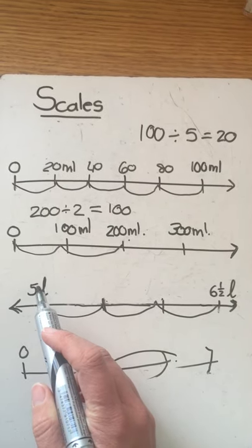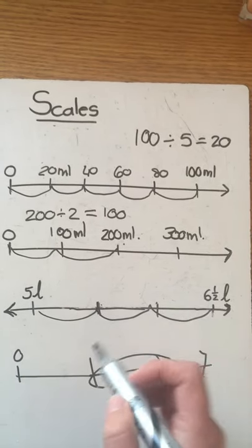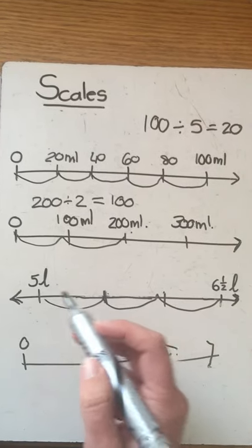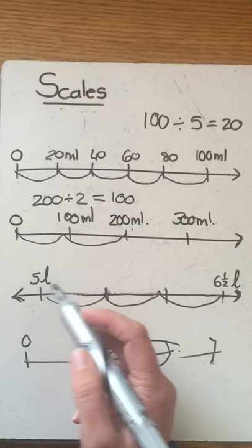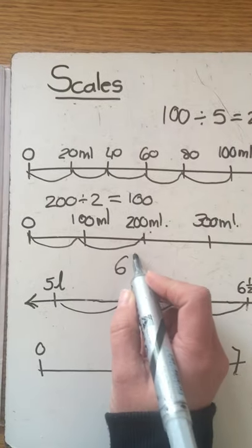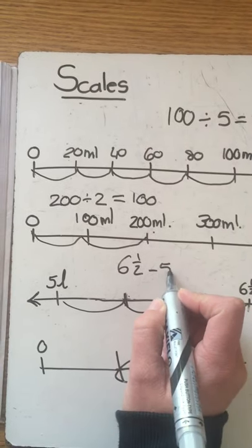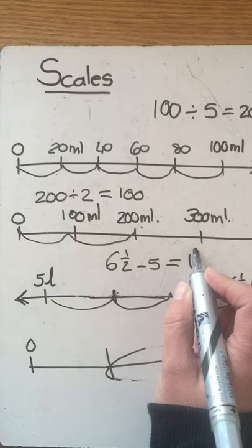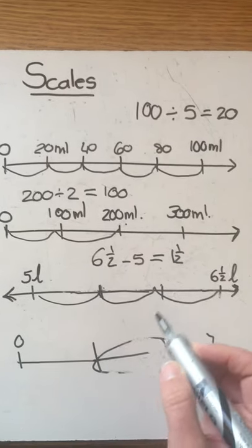Now what's the difference between five liters and six and a half liters? How much do I have to add to five to get to six and a half? We can say six and a half minus five and that gives us one and a half liters and there's three spaces.